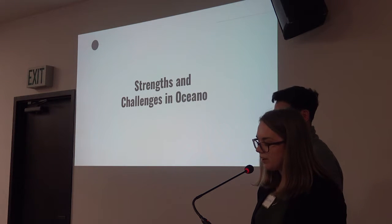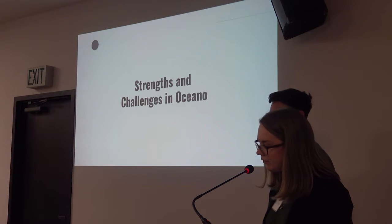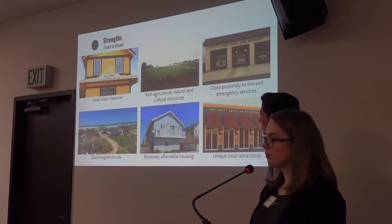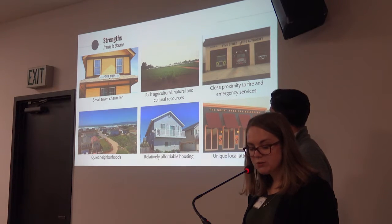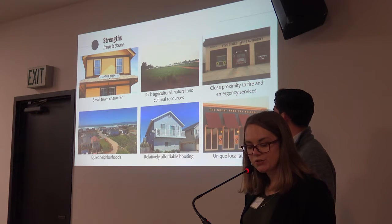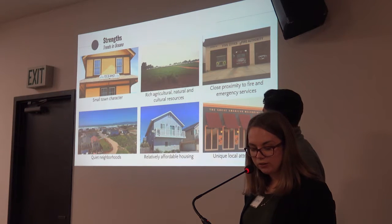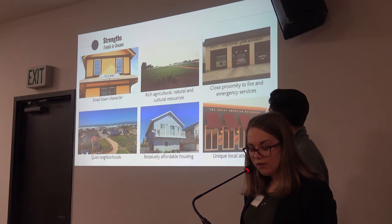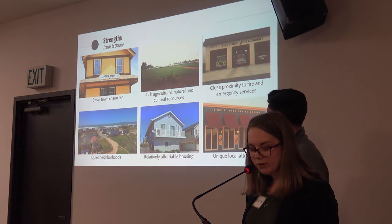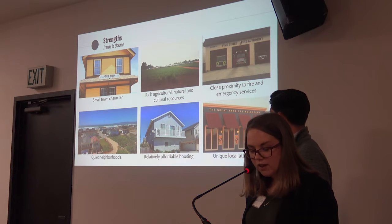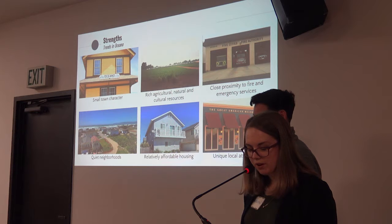Before diving into alternative development scenarios, we wanted to briefly review community-identified strengths and challenges facing Oceano. Based on community feedback from the previous two meetings, the main strengths of Oceano include its rural, small-town character, the rich agricultural, natural, and cultural resources, residents' close proximity to fire and emergency services, its quiet neighborhoods thanks to well-defined industrial and residential areas, housing that is more affordable relative to other areas in the county, and unique tourist attractions such as the Oceano Dunes and the American Mellow Drama.